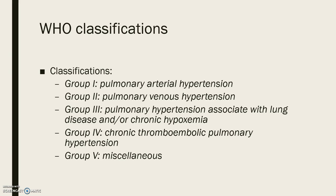Group 3 is pulmonary hypertension associated with lung disease and/or chronic hypoxia. This includes COPD, ILD, restrictive lung disease, OSA, and chronic exposure to high altitudes.